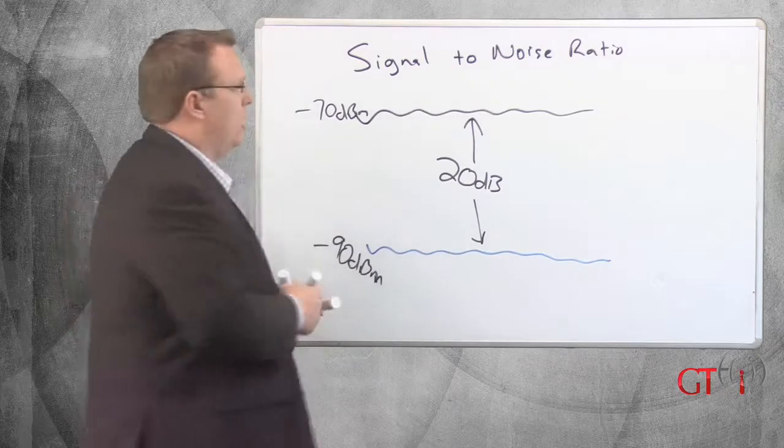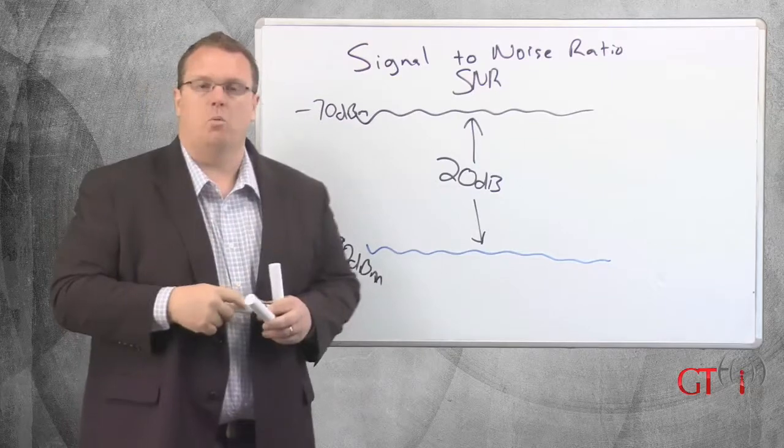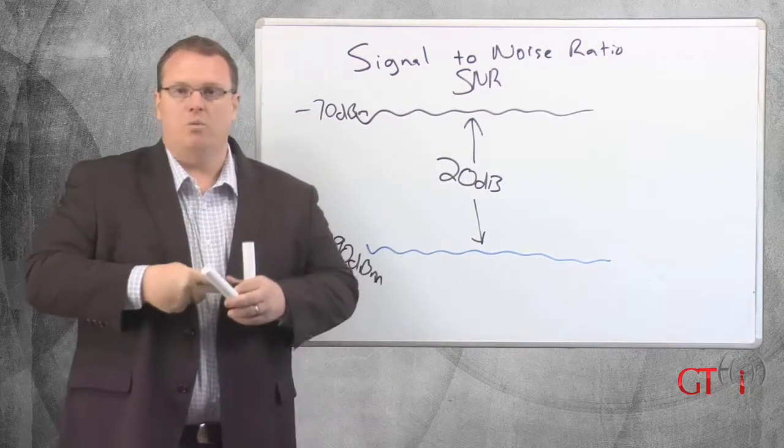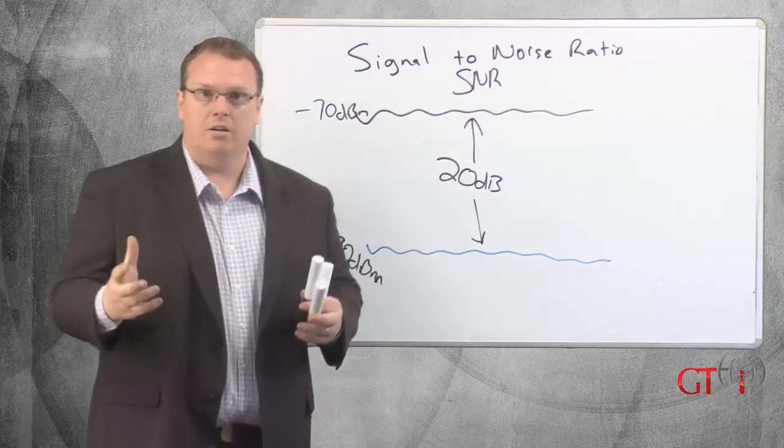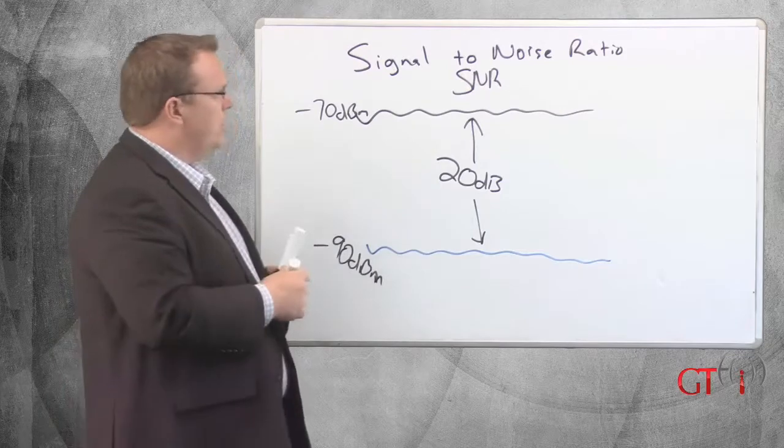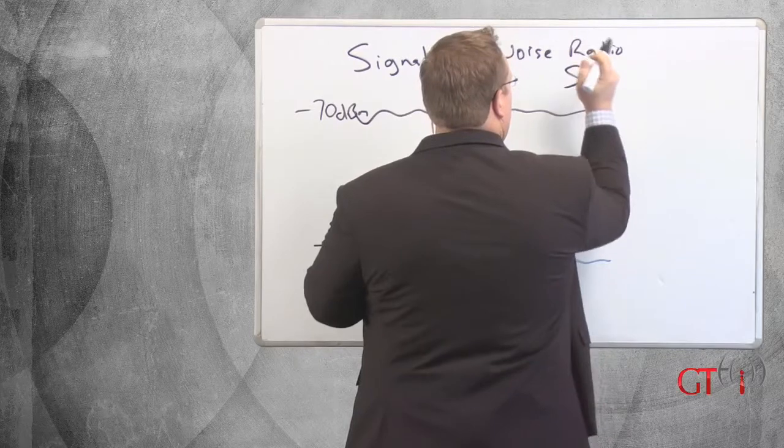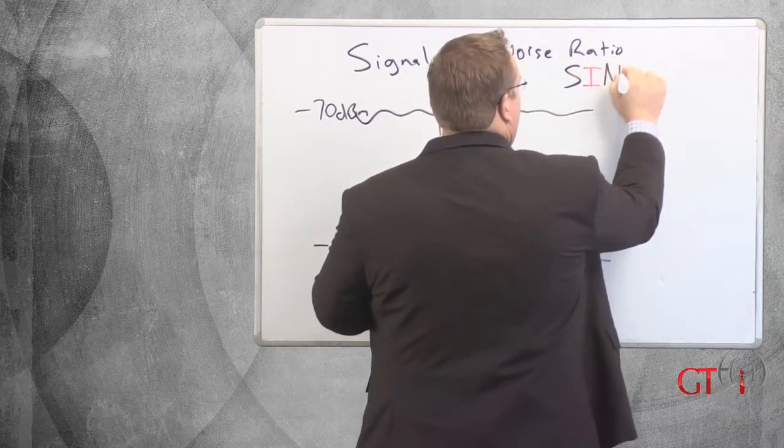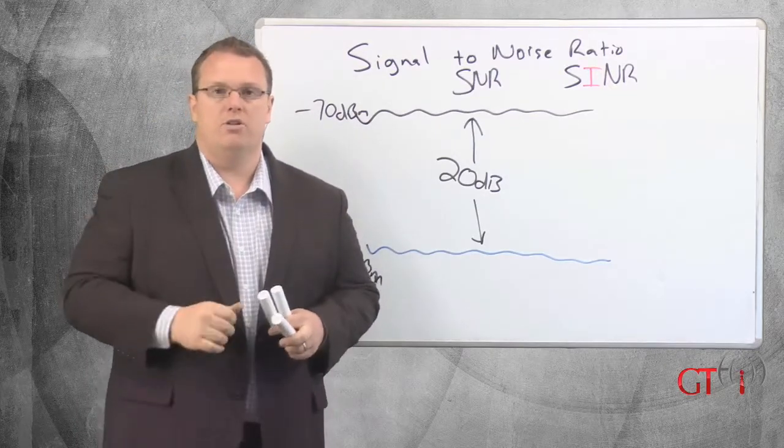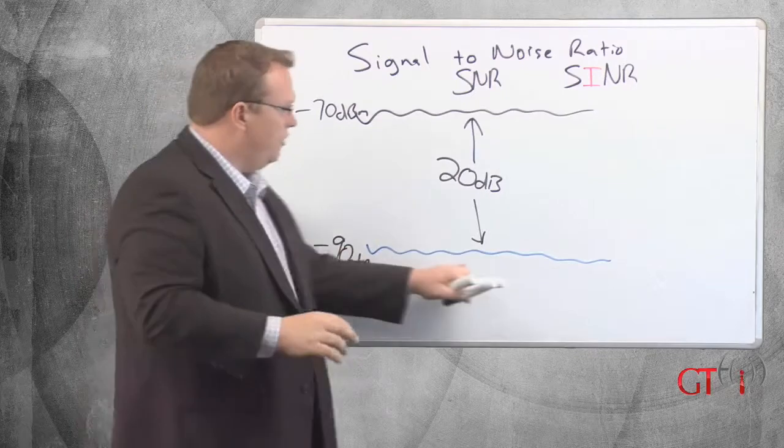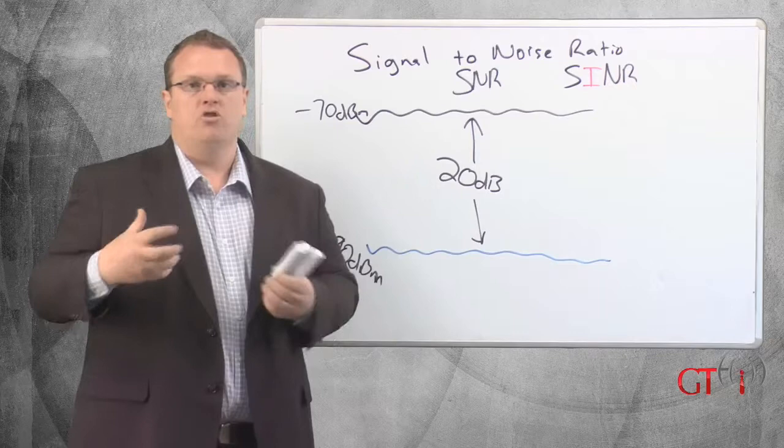If we want to be technical about it, the term signal-to-noise ratio, SNR, is not always used correctly within the Wi-Fi industry. It's okay the way we use it, it's generally accepted, but we should probably be as accurate as we can. So there's another term that's not used as often called SINR, emphasizing the I here. That's signal to interference plus noise ratio.